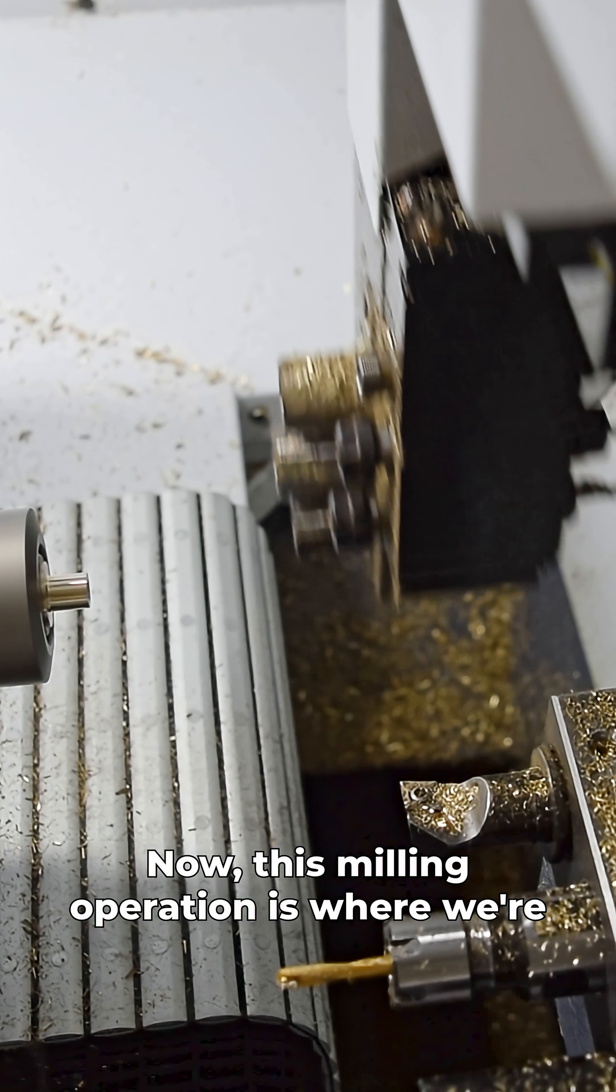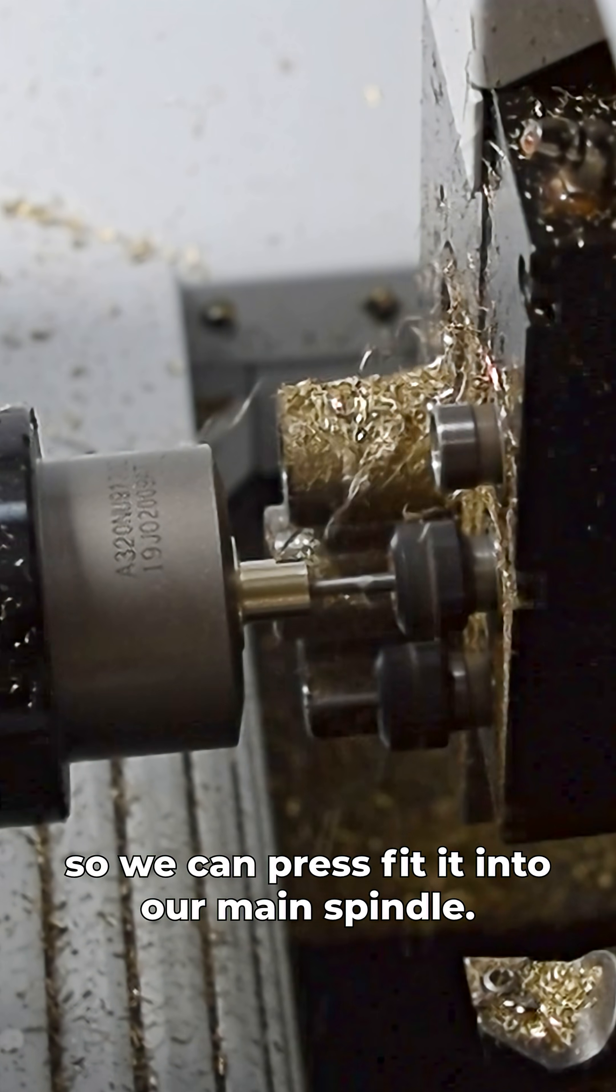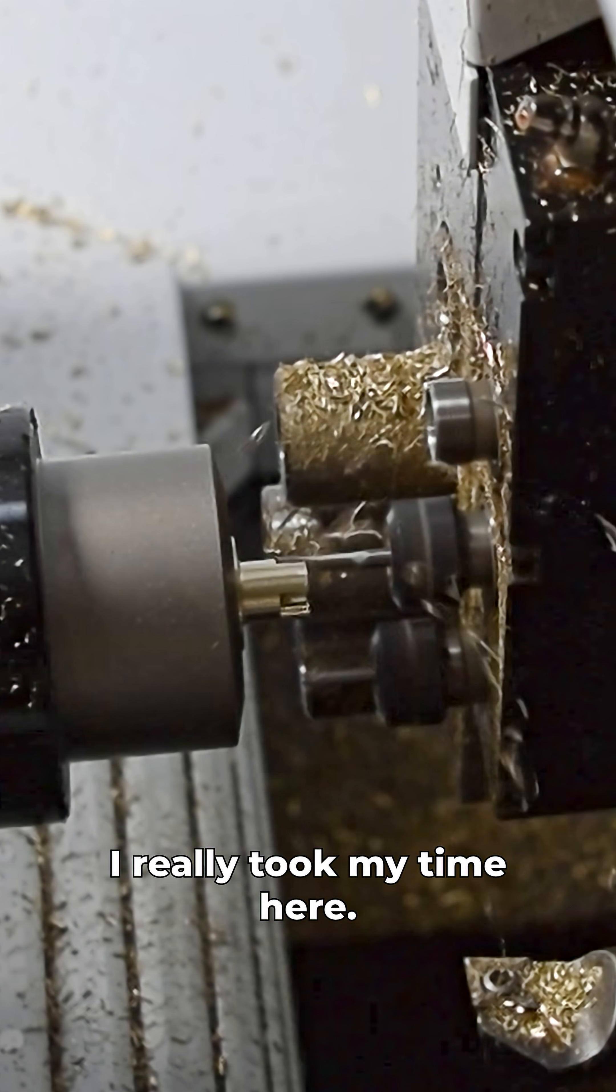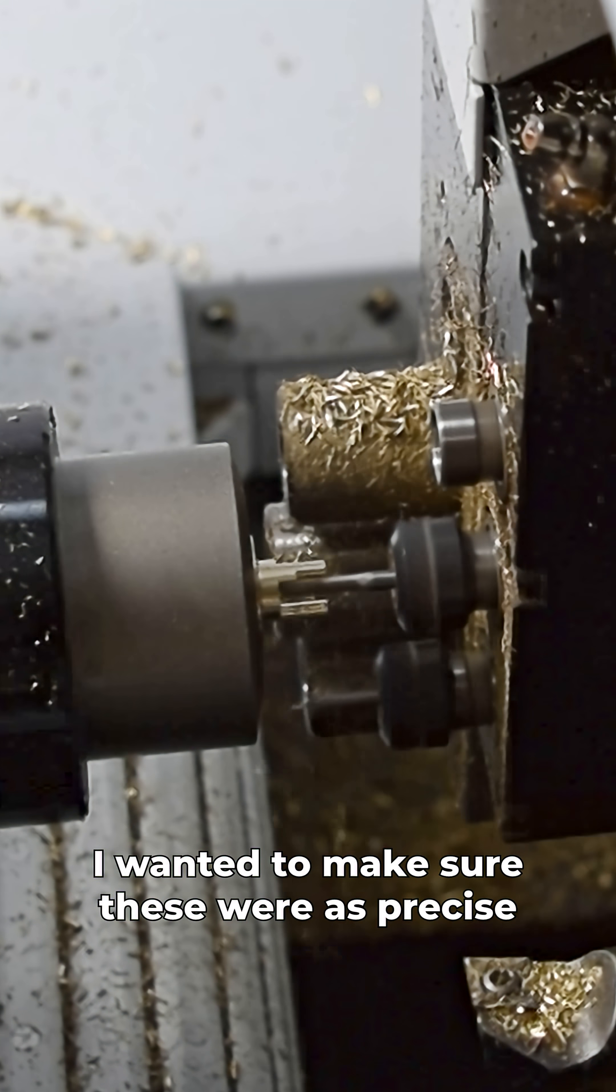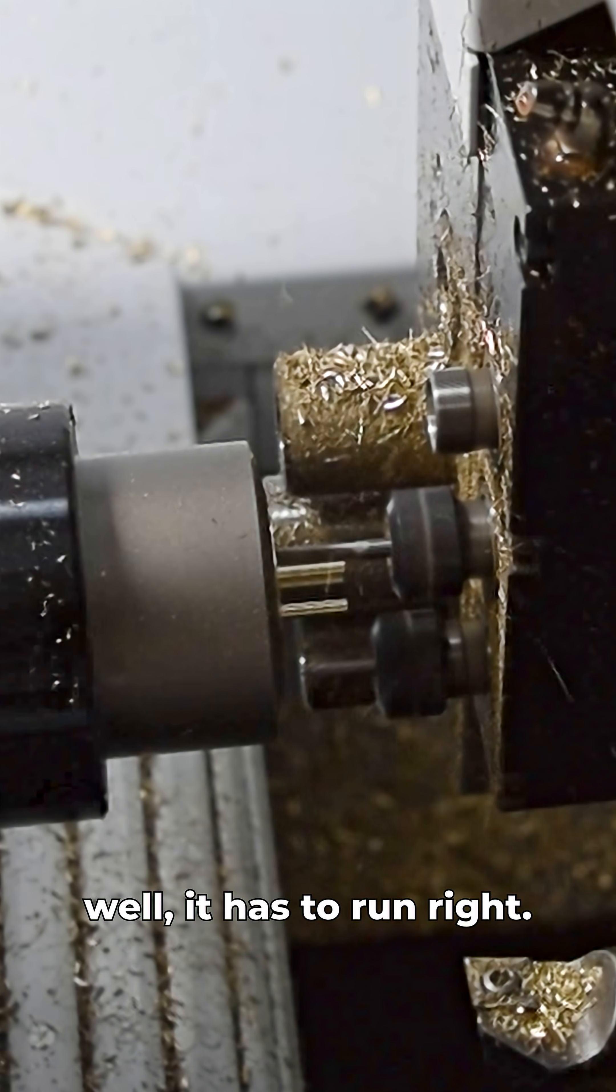Now this milling operation is where we're going to add the three pegs onto the part so we can press fit it into our main spindle. I really took my time here. I wanted to make sure these were as precise and as consistent as possible because it has to run right.